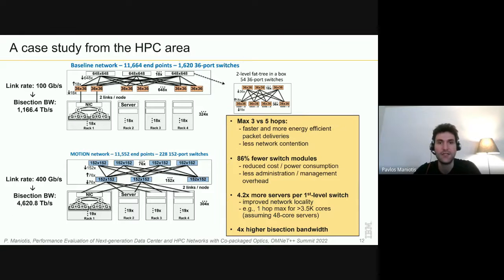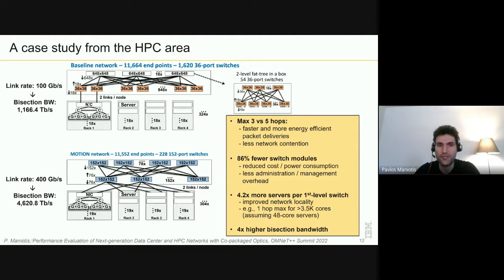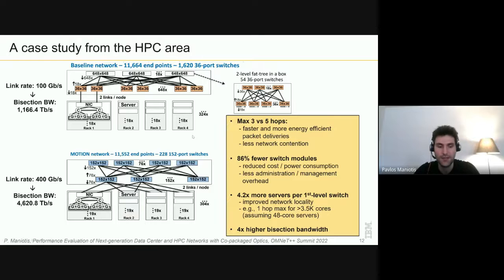Now let's talk about how the system architecture is going to be affected. We considered a case from the HPC area: on top you can see a network inspired by the Summit supercomputer. At the time it was built they used 36×36 switches at 100 gigabps per port, and to connect all the nodes they implemented a three-level network — servers in racks, top-of-rack switches, and big boxes implementing two-level networks inside. Now we assume a next-generation switch module with co-packaged optics, with 152 ports.